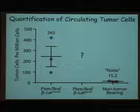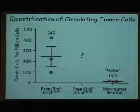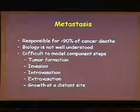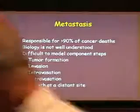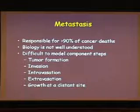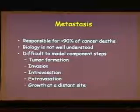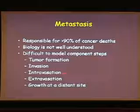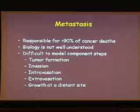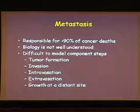Here's a quantitation of different genetic backgrounds, where we see many more circulating tumor cells in certain genetic backgrounds than in wild-type mice or in tumor backgrounds that don't tend to have as many metastases. We've always been most interested in studying the biology of metastasis, and the biology is not really well understood, despite the fact that disseminated tumor accounts for probably over 90% of cancer deaths. One reason is that it's really difficult to model this in a dish — you really need a vascular system, an immune system, and other things to fully understand the different steps, which might include tumor formation, invasion into underlying tissue, getting into a blood vessel, and then extravasation at a distant site.